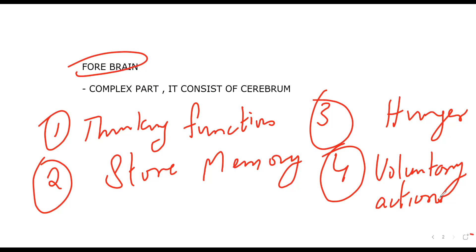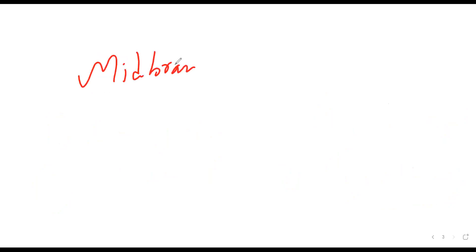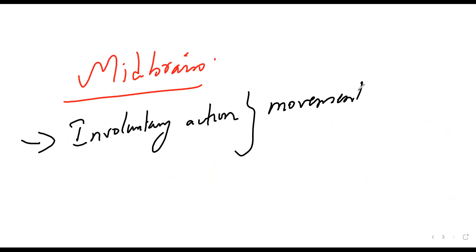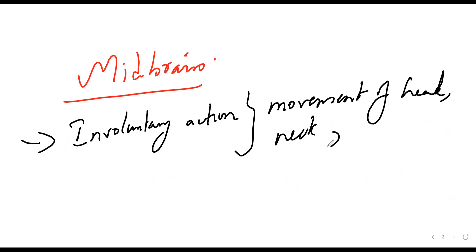The second part is the midbrain. It controls involuntary actions like the movement of the head and neck.